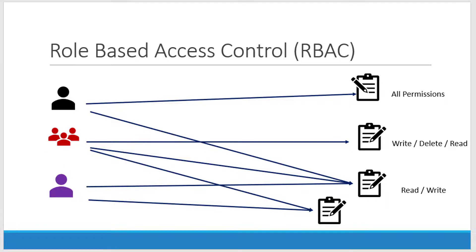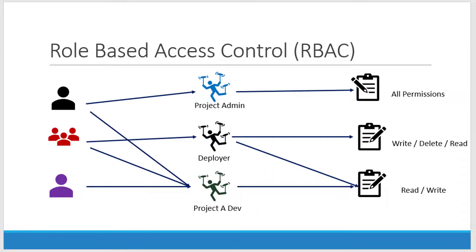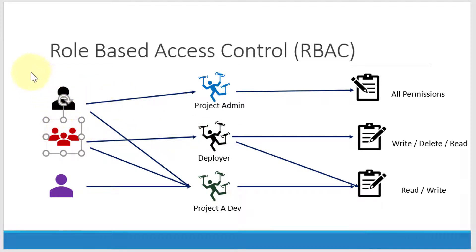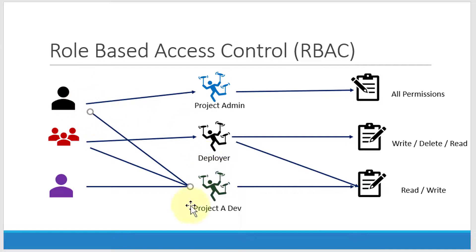And that's where role-based access control comes into picture, where I'm going to have some sort of a virtual middle layer called a role. I can create a role and add the permissions to the role, and I can map n number of policies to the role. Users can be made to play any such role, and in case a particular user is not part of that particular project, all I need to do is remove the mapping to the role or remove the policy from the role.